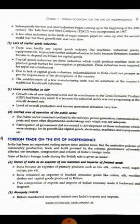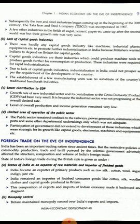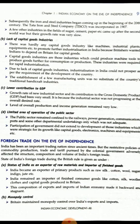Next is the limited area of operation of the public sector. The public sector was confined to the railway, power generation, and communication ports — because these helped the colonial government to run the administration in this country. Railway was needed to transport the army and oil, power generation was only to help the company government, and communication ports were only to export raw material out of India. The colonial government did not take interest in electronics, heavy machines, and equipment.